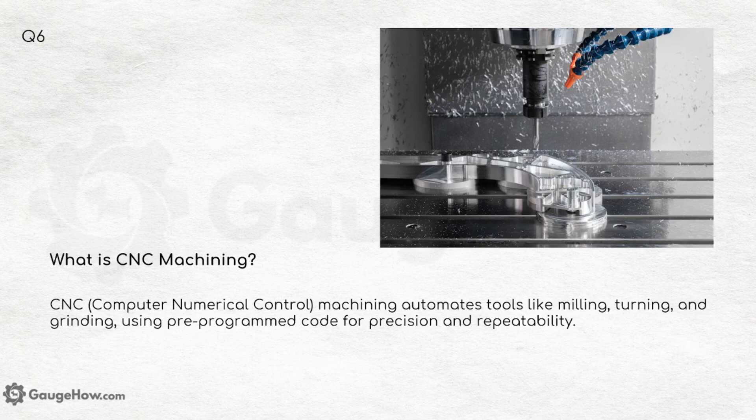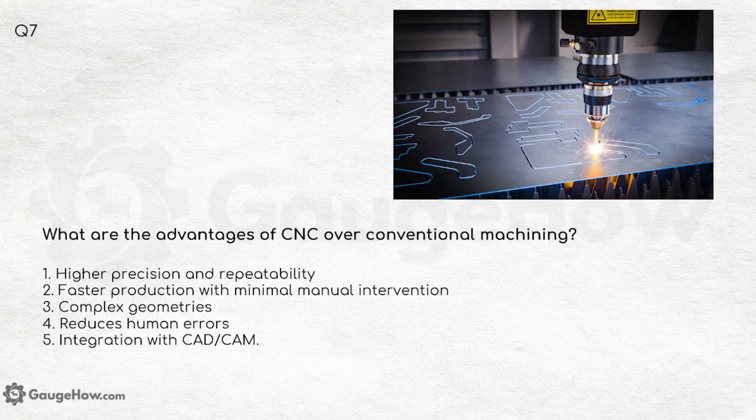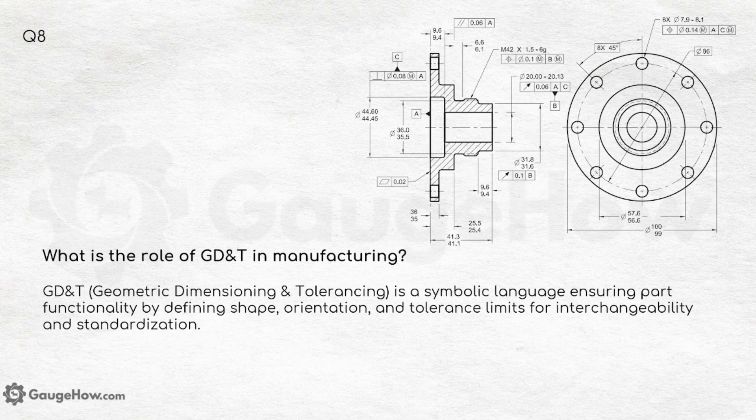These codes include G-code and M-code. What are the advantages of CNC over conventional machining? Higher precision and repeatability, faster production with minimum manual intervention, ability to produce complex geometries, reduced human errors, and integration of CAD and CAM with the processes.